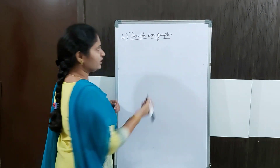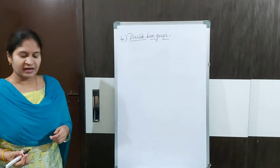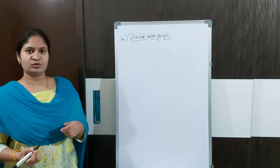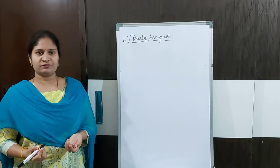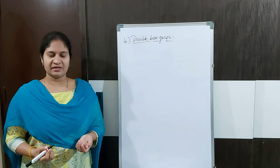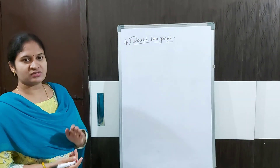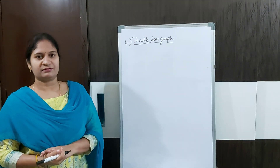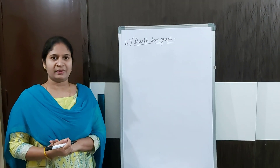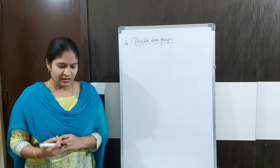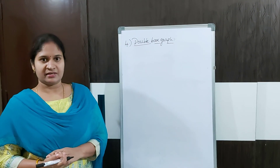What is a double bar graph? A double bar graph shows two sets of data simultaneously. Where will we use this double bar graph? A double bar graph is used to compare two sets of data simultaneously.